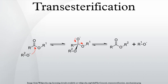In organic chemistry, transesterification is the process of exchanging the organic group R of an ester with the organic group R of an alcohol. These reactions are often catalyzed by the addition of an acid or base catalyst.